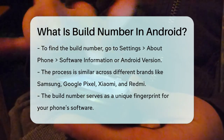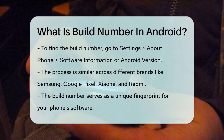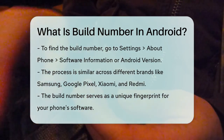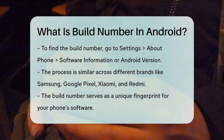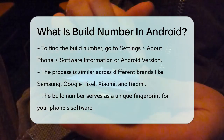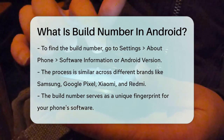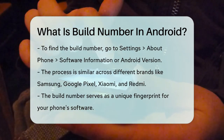So the next time you're curious about the exact software running on your Android device, just check the build number. It's like having a unique fingerprint for your phone's software.